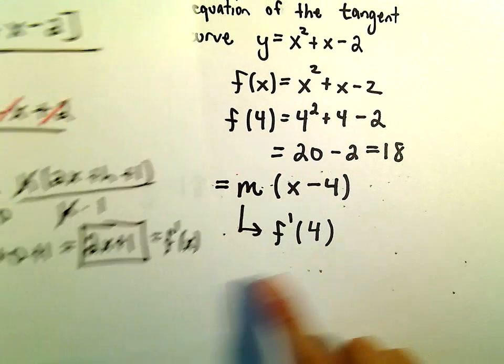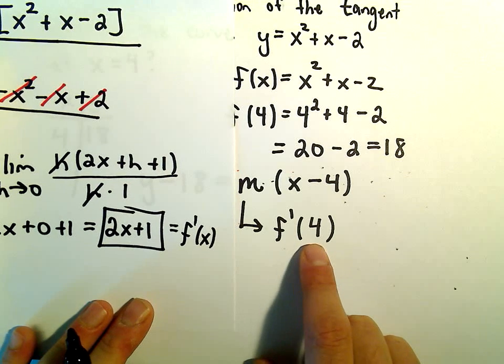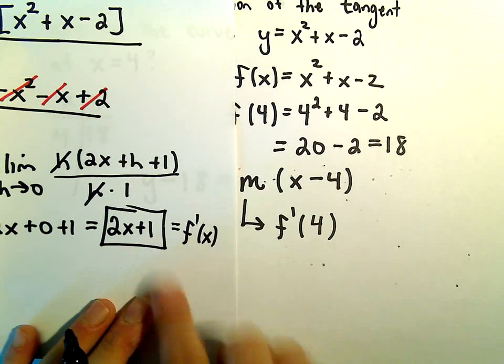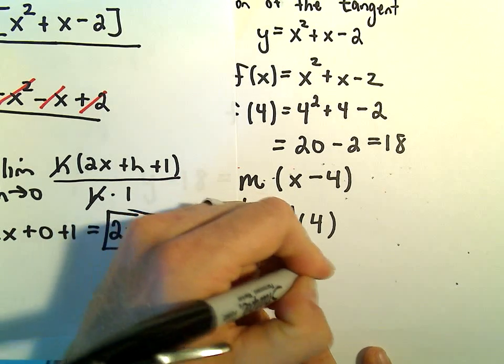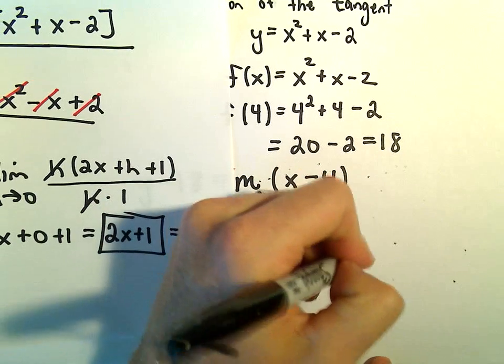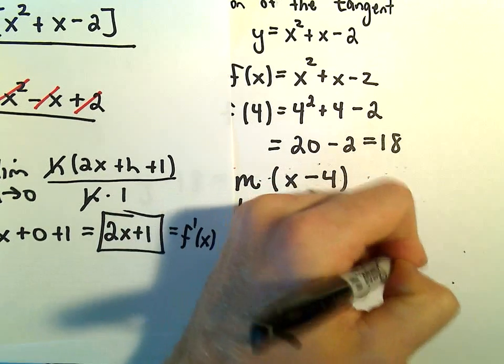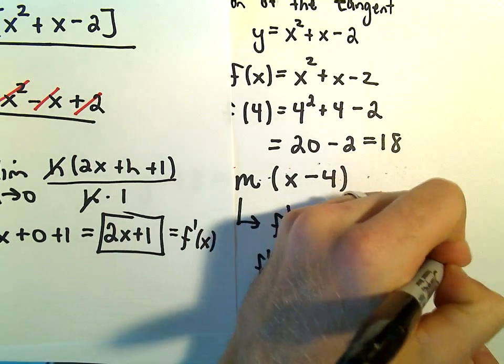So we said to figure out the slope of the tangent line, all we have to do is find the derivative and then plug in the x-coordinate of 4. So it says f prime of 4. That'll give us 2 times 4 plus 1. Well, 2 times 4 is just 8 plus 1. That's going to give us 9.